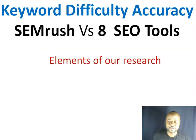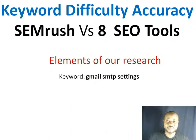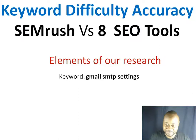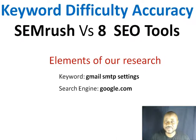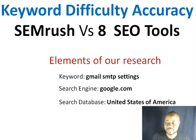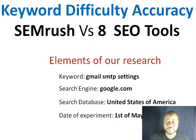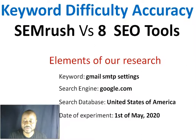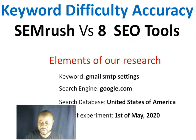The main keyword we focused on is 'Gmail SMTP settings.' The search engine selected across all tools is Google.com, the country is the United States of America, and this experiment was done on the first of May 2020.